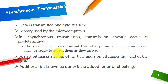In asynchronous transmission, data is transmitted one byte at a time. This is a major difference between synchronous and asynchronous transmission. In synchronous transmission, data is sent in the form of blocks or words and you can transmit a large amount of data at the same time, whereas in asynchronous transmission the data is transmitted one byte at a time and there are spaces between the bytes to be sent, whereas in synchronous transmission there were no spaces.